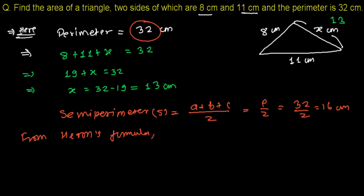And now from Heron's formula, area of triangle equals the square root of s times s minus a times s minus b times s minus c. Here a, b, c are representing the three sides of the triangle. So s is representing the semi-perimeter that we have already written.